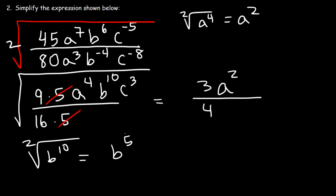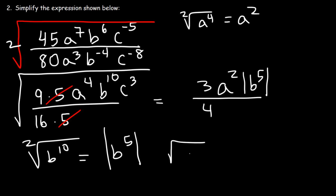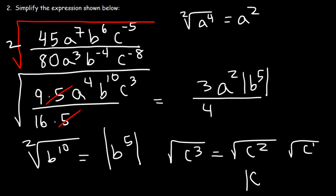Now we have an even index number and an odd exponent, so we need to enclose this using an absolute value. Now what about the square root of c to the 3rd? We can break that into the square root of c squared times the square root of c. 1 plus 2 is 3. The square root of c squared is c, so this is going to be the absolute value of c times radical c.